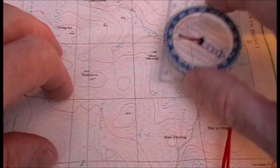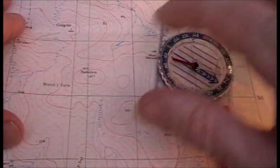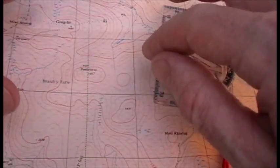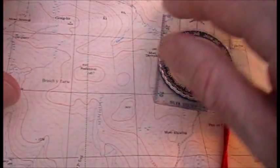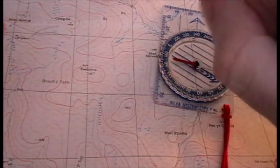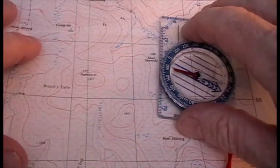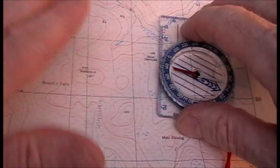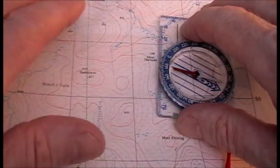Now, Ordnance Survey maps come in 1 to 25,000, such as this one here, and 1 to 50,000. What that means is on a 1 to 25,000 map like the one I got here, one unit of measure on the map is equal to 25,000 units of measure on the actual ground.